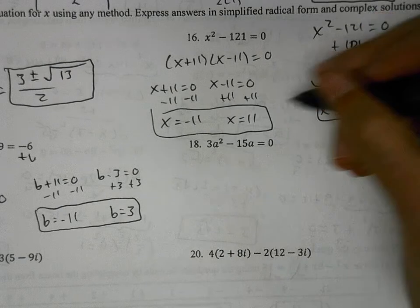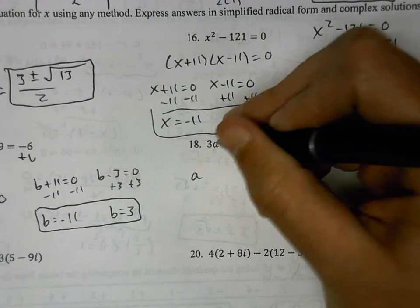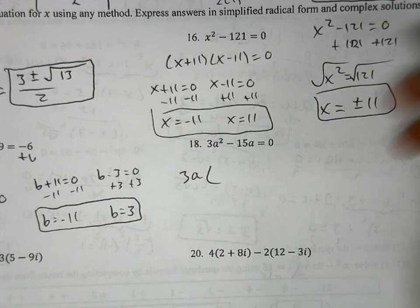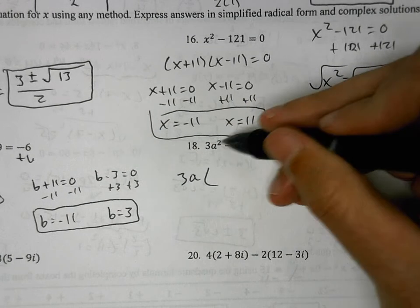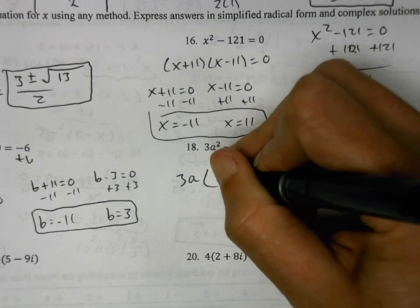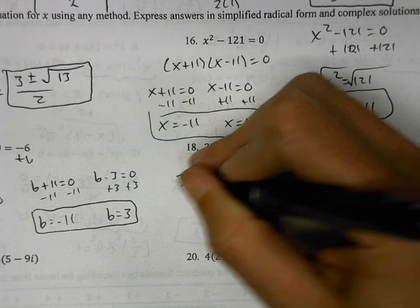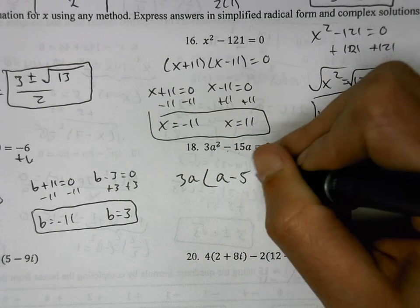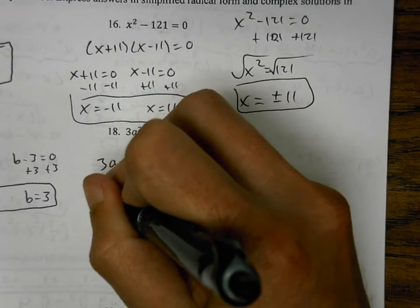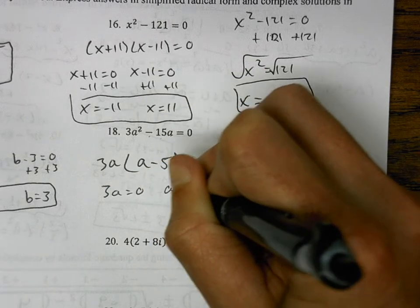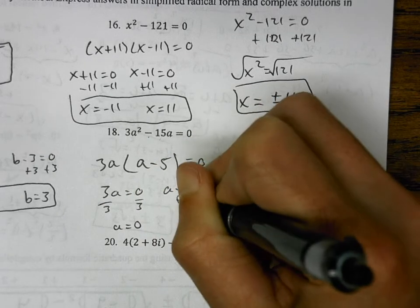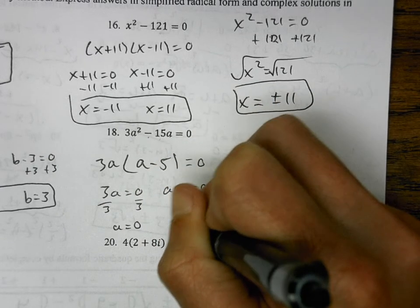Problem 18: factor using the GCF. Both terms share 3a in common, since 3 and 15 are divisible by 3 and both terms have an a. Factoring out 3a: 3a times (a − 5) equals 0. So 3a = 0 gives a = 0, and a − 5 = 0 gives a = 5. Our answers are 0 and 5. Note: if using the quadratic formula, a = 3, b = negative 15, and c = 0.